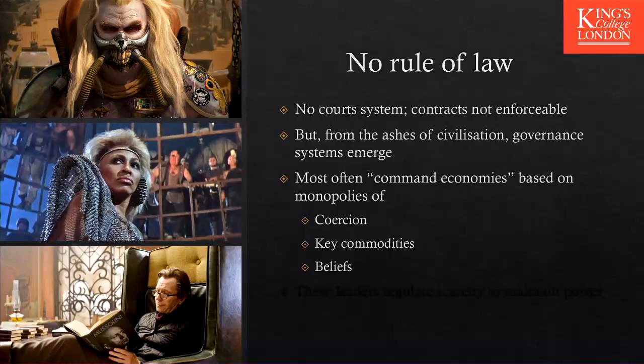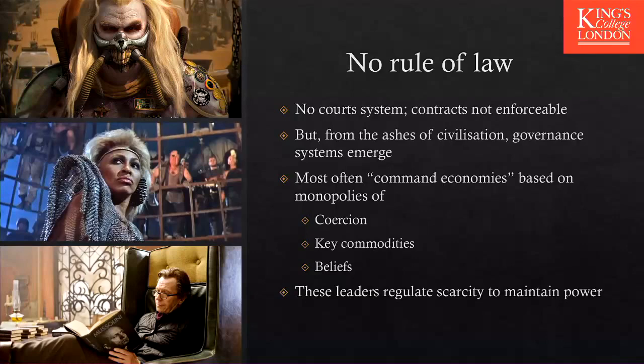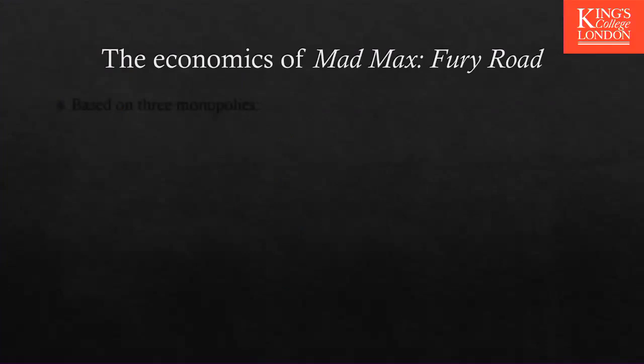These leaders also have monopolies over key commodities and over beliefs — as in the case of Immortan Joe, where people believe in the leader's divine or special powers. That gives them power. These leaders, because they have monopolies over key resources, regulate their availability to maintain their power. You can see this especially in Mad Max: Fury Road. The economy in that world is based on three monopolies.